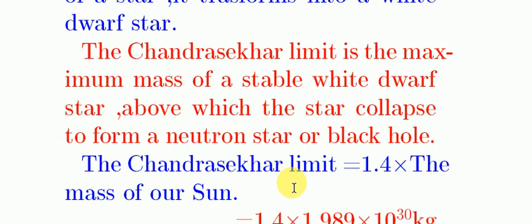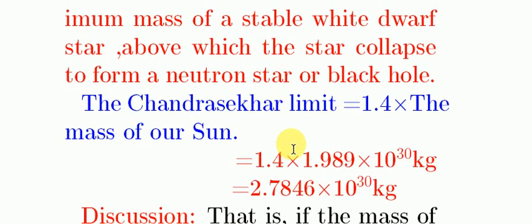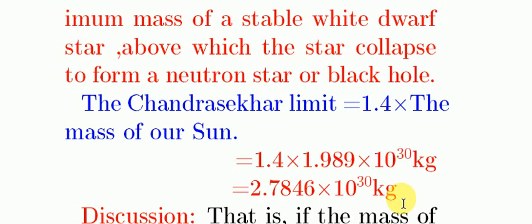The Chandrasekhar Limit is equal to 1.4 times the mass of our sun. The mass of our sun is 1.989 × 10³⁰ kg, giving a Chandrasekhar Limit of 2.7846 × 10³⁰ kg.